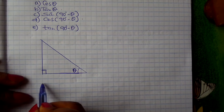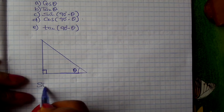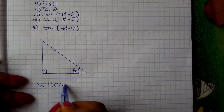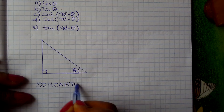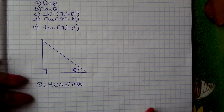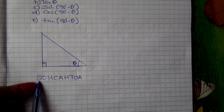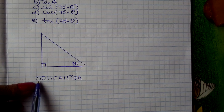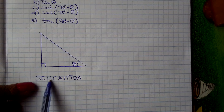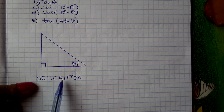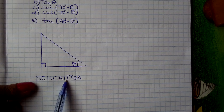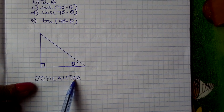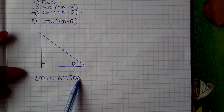You have learned about what we call SOH-CAH-TOA. It helps us to remember about what sin theta, tan theta, and cos theta are, or how you find them. So sin theta is equals to opposite over hypotenuse, cos is equals to adjacent over hypotenuse, and tan theta is equals to opposite over adjacent.